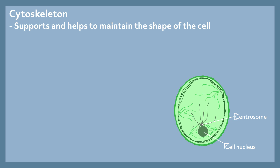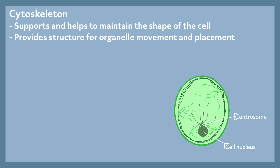Cytoskeleton. The cytoskeleton is networked all throughout the cytoplasm and handles several essential functions. It supports and helps maintain the shape of the cell, holds the organelles in their place, and is directly responsible for the movement of organelles throughout the cell. The three components that the cytoskeleton is composed of — microfilaments, intermediate filaments, and microtubules — all have their own set of primary functions.